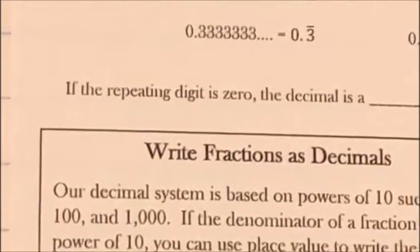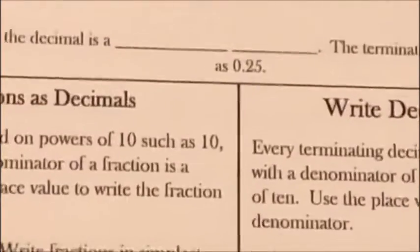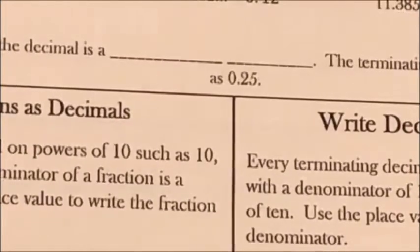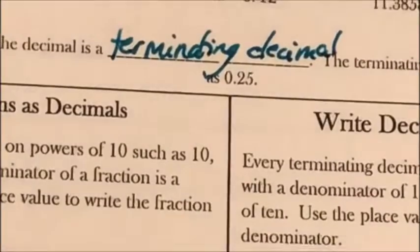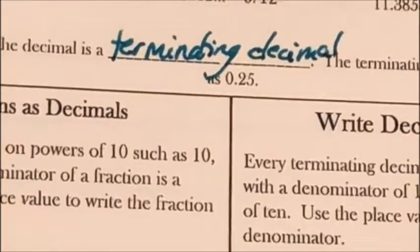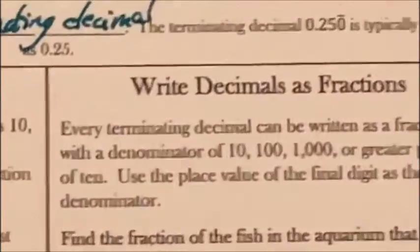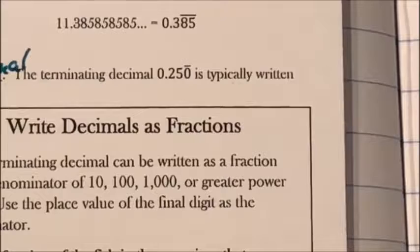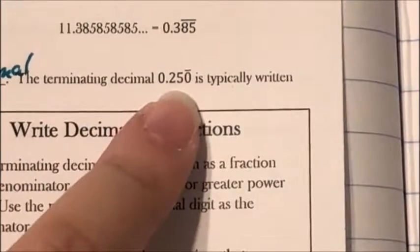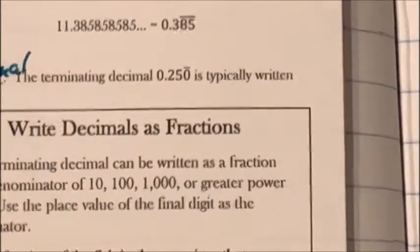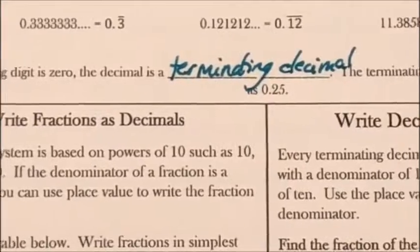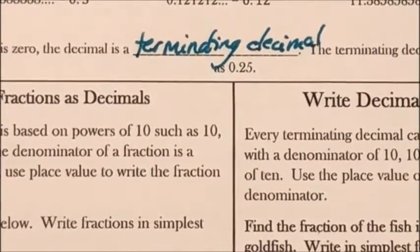If the repeating digit is 0, the decimal is a terminating decimal. The terminating decimal 0.250, where the bar is over the 0, is typically written as just 0.25 — you don't have to include the 0 with the bar over it.